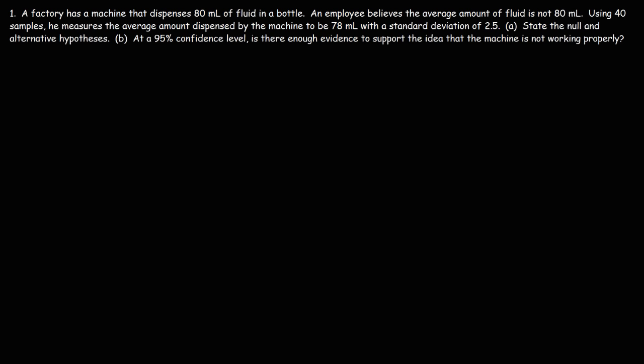Feel free to pause the video if you want to try this problem yourself. Let's start with the null hypothesis — this is the status quo. The machine in the factory dispenses an average of 80 milliliters. Now the alternative hypothesis is what is being tested. The employee believes that the average amount of fluid is not 80, so we say that mu does not equal 80 for the alternative hypothesis.